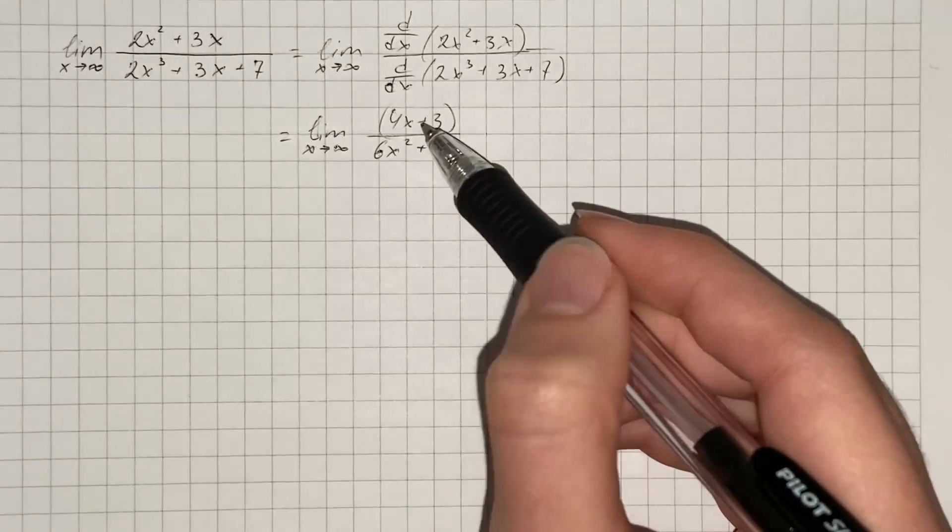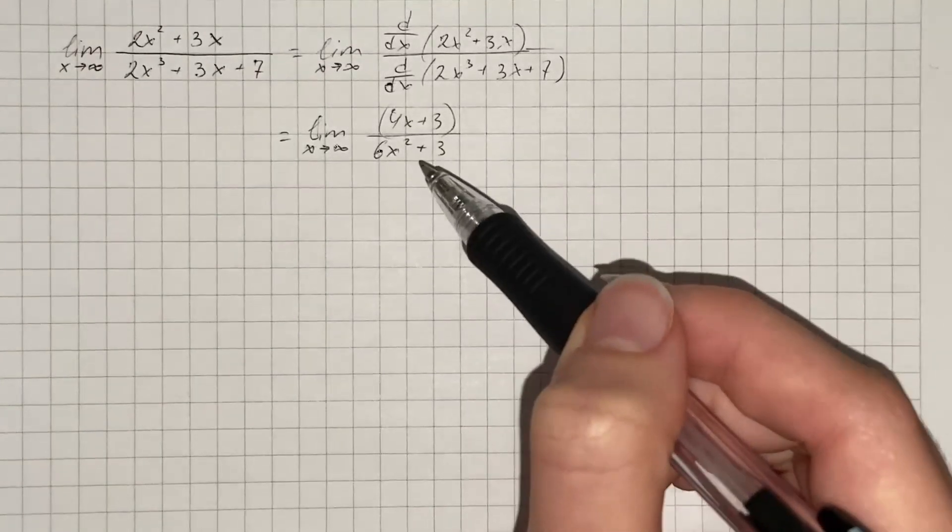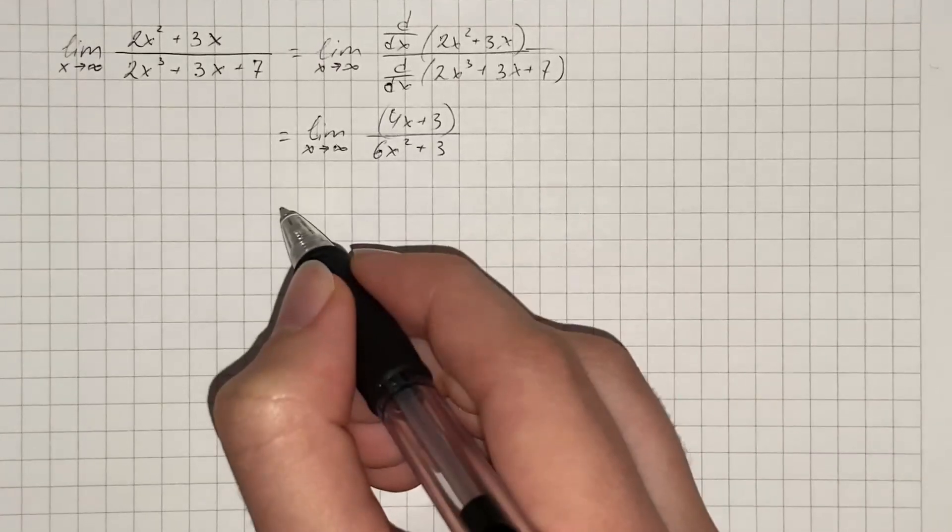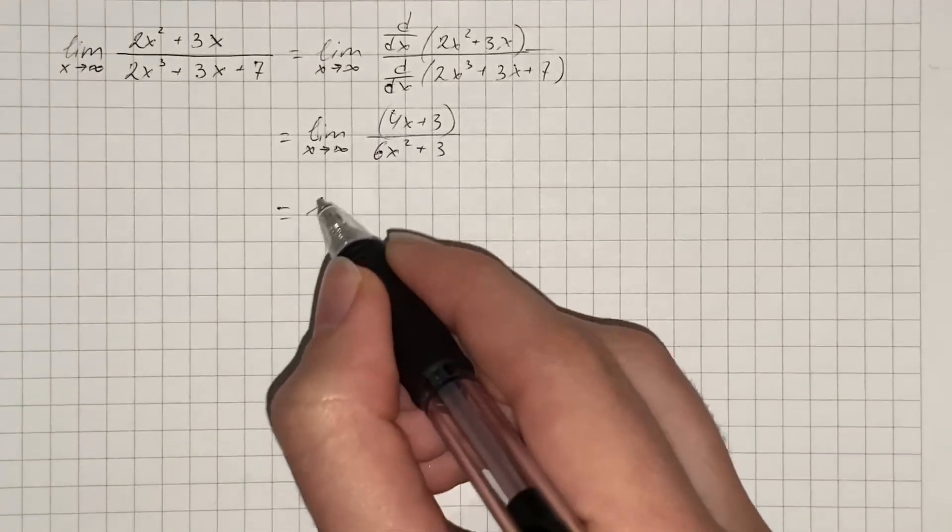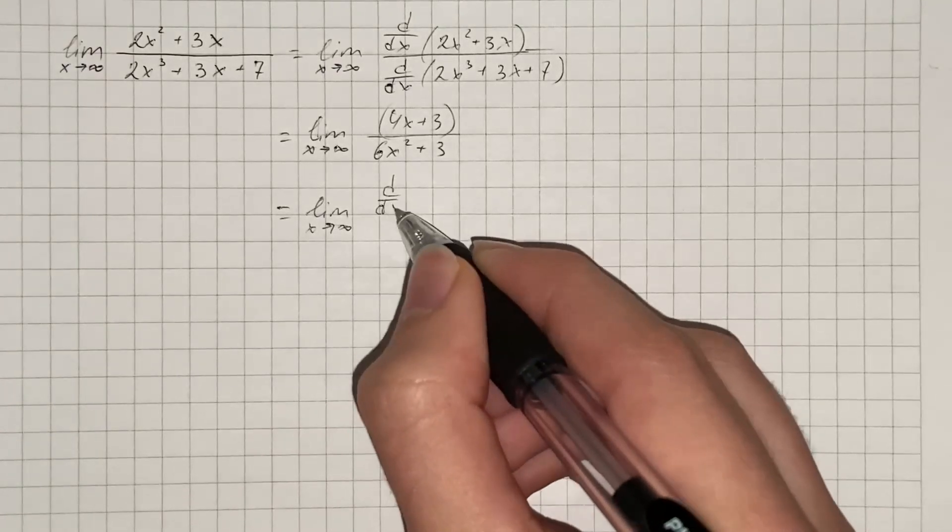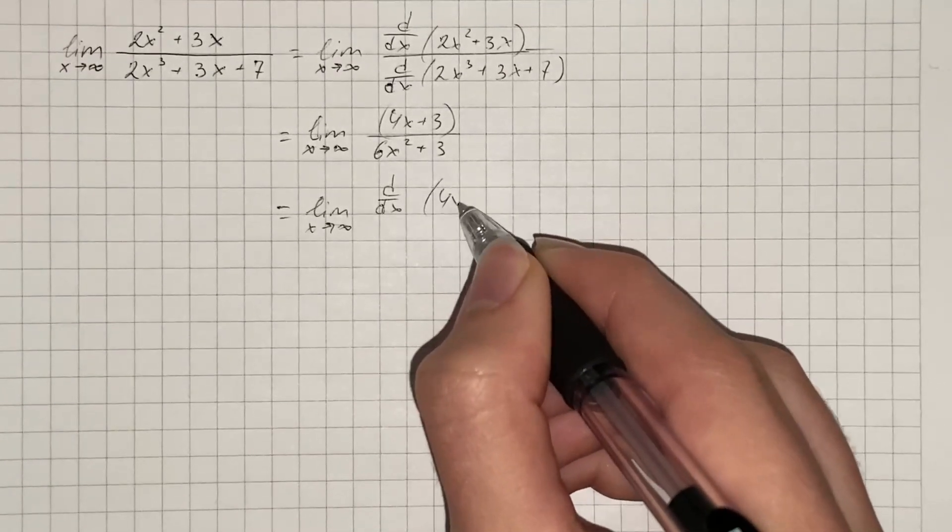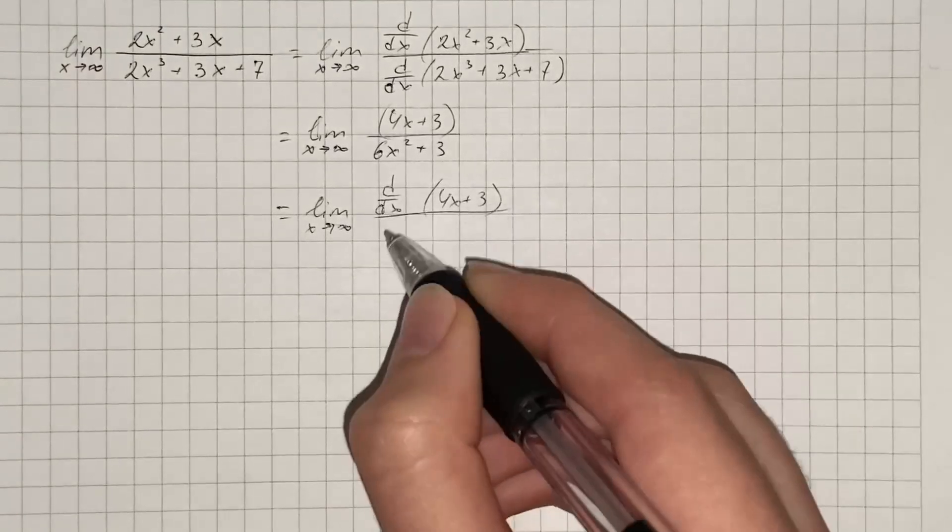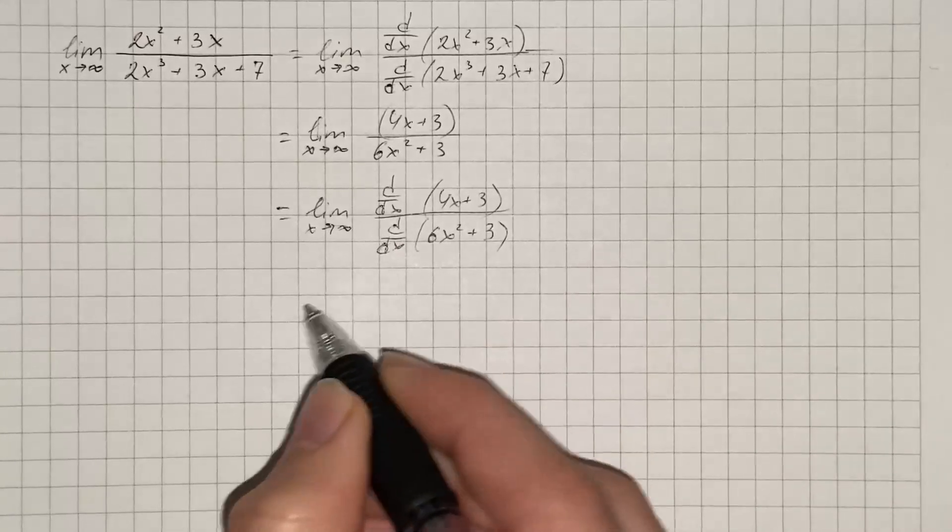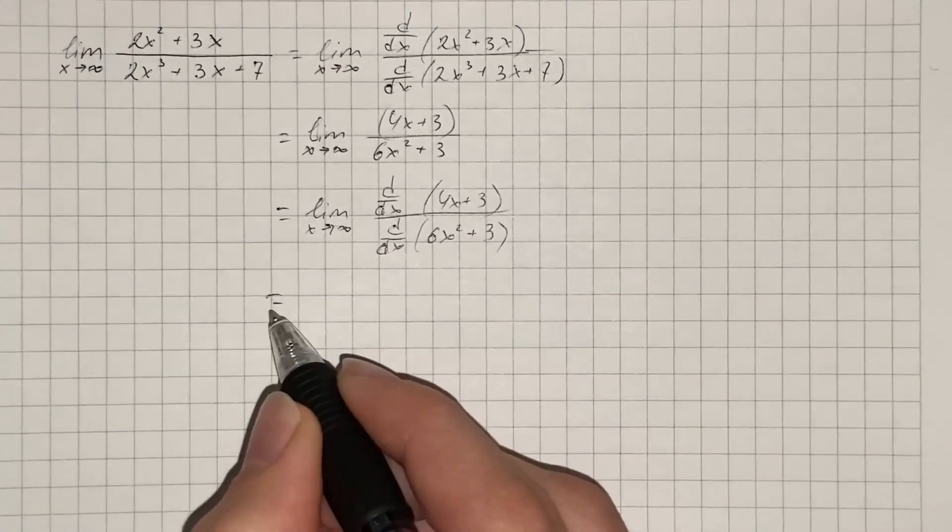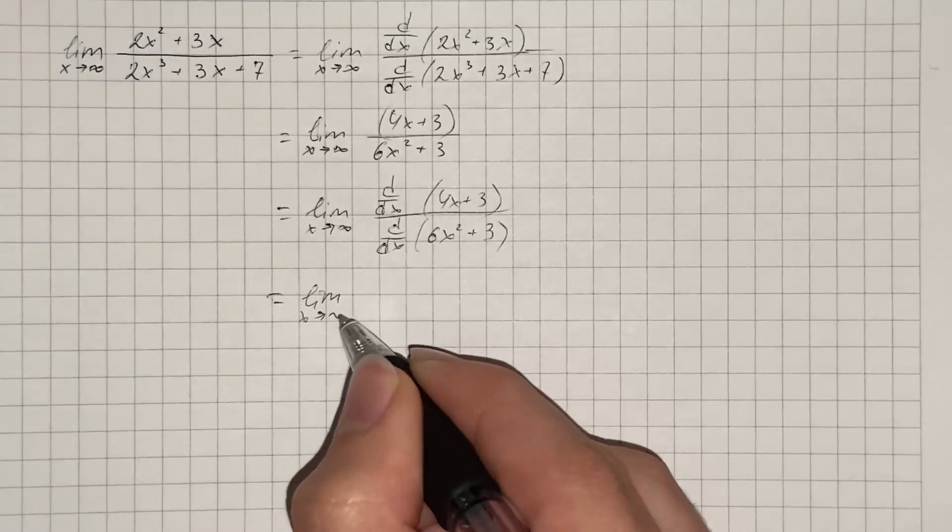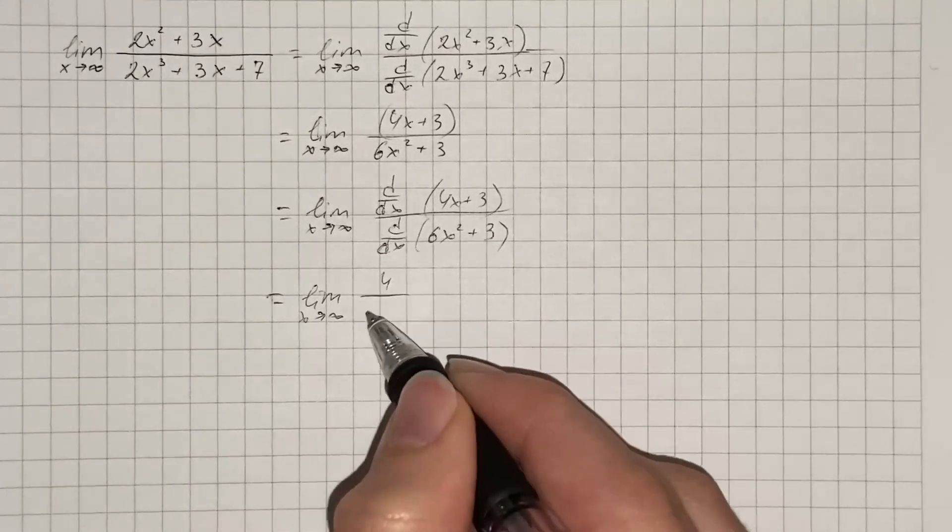So we still have indeterminate form infinity over infinity, so we apply L'Hôpital's rule again. We take derivative of 4x plus 3, and also we take derivative of the denominator, and now we're going to get limit as x approaches infinity of 4 over 6x.